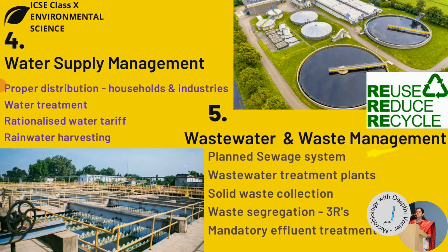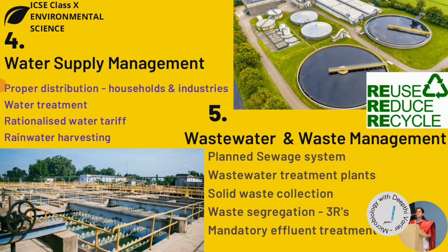The fifth component is wastewater and sanitary waste management. Waste is a big problem globally — the discharge of untreated waste into water bodies causes pollution. There has to be a planned sewage system in every city; many cities only treat some wastewater, while most is disposed untreated into land or water bodies. Wastewater treatment plants have to be increased in number. Solid waste collection must also be improved for every household and establishment, and waste should be segregated so some can be reused.